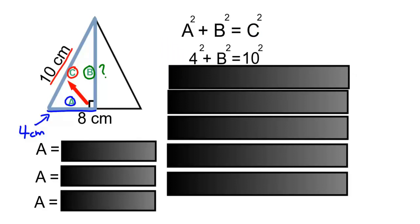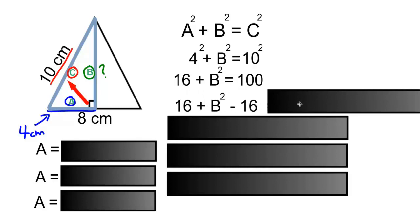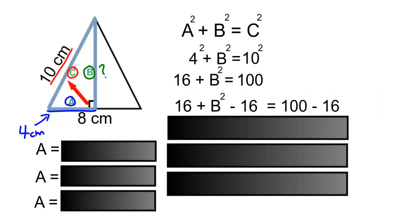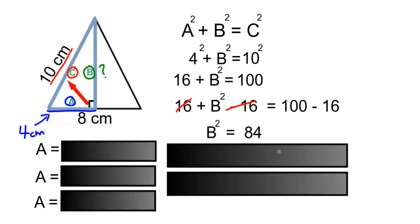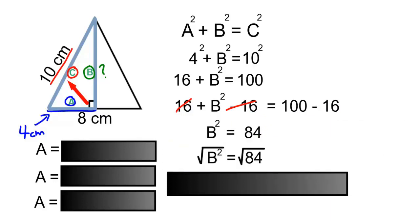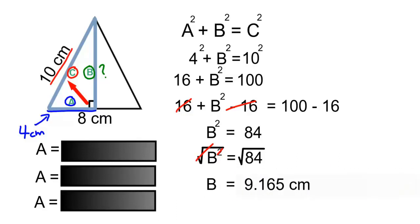So a squared plus b squared equals c squared: 4 squared plus b squared equals 10 squared. 4 squared is 16, and 10 squared is 100. To remove the 16 from the left-hand side, we subtract 16 from both sides. The 16s cancel, leaving b squared equals 100 minus 16, which gives us 84. To solve for b, we take the square root of both sides. The square root of 84, rounded to the nearest thousandth, is 9.165 centimeters.